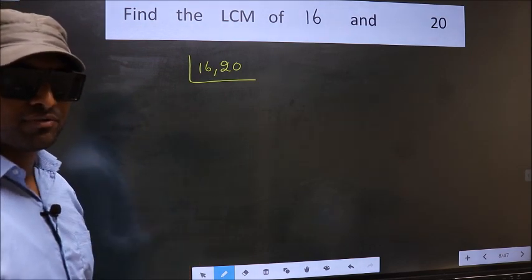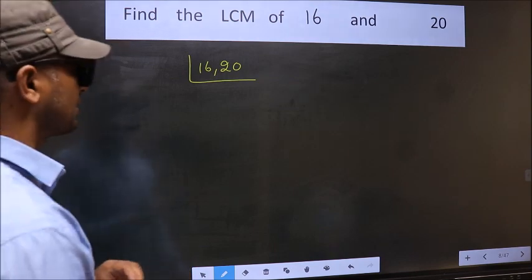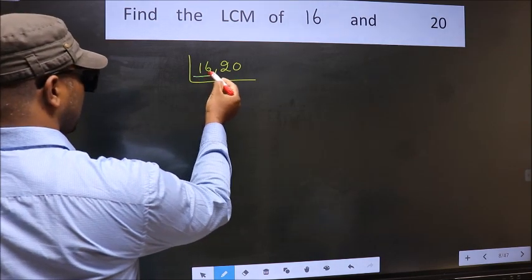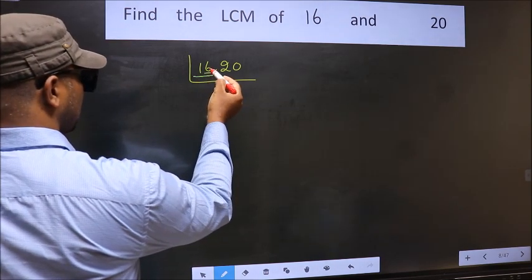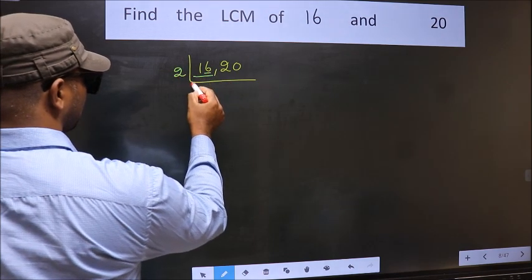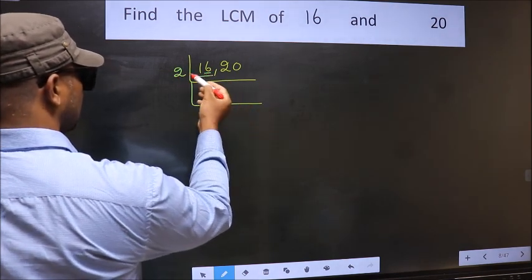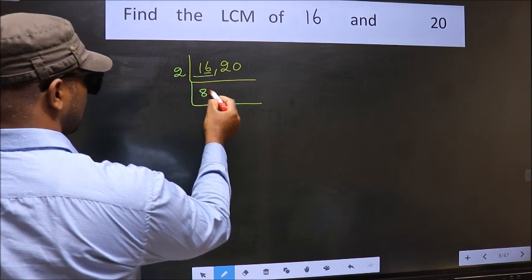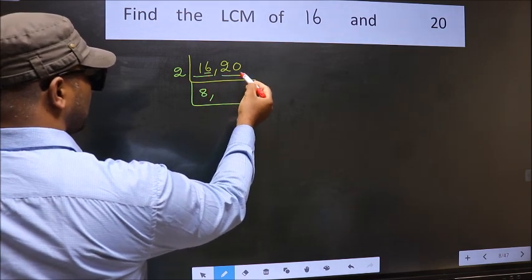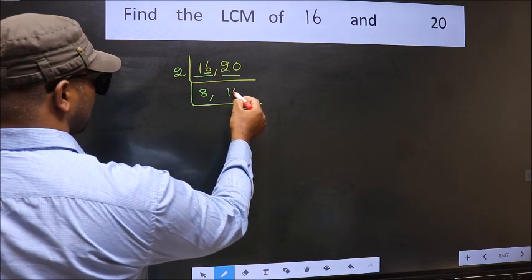Now you should focus on the first number, which is 16 here. The last digit is 6, so take 2. When do we get 16 in the 2 table? 2, 8, 16. The other number 20 — when do we get 20 in the 2 table? 2, 10, 20.